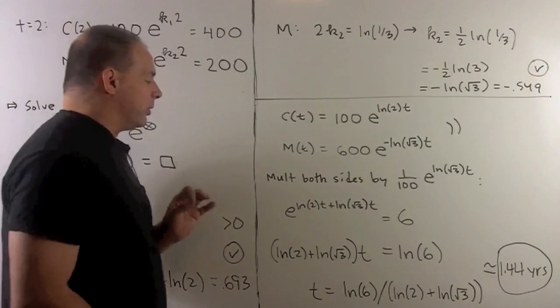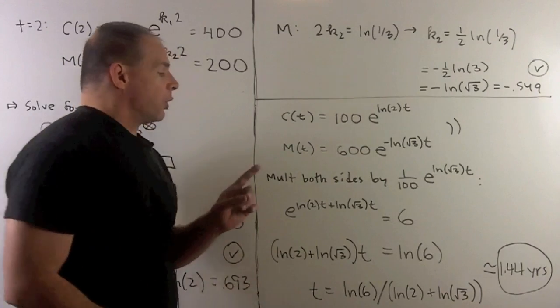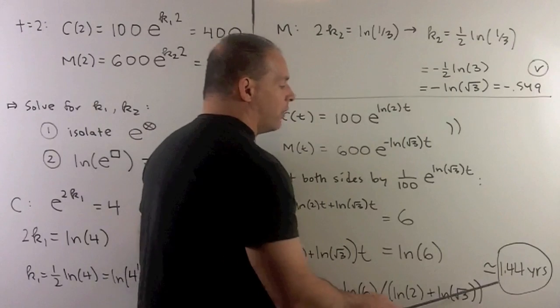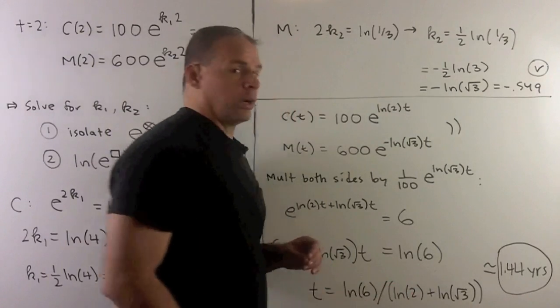Note, the only variable now is the t. So we can go to the calculator, put the numbers in. And what comes out is our answer of 1.44 years.